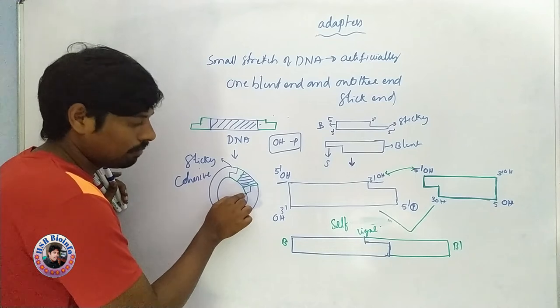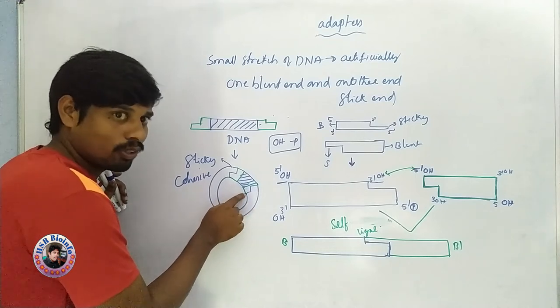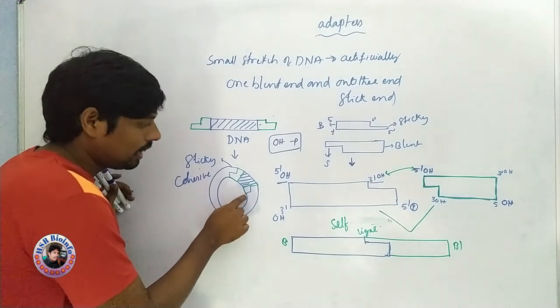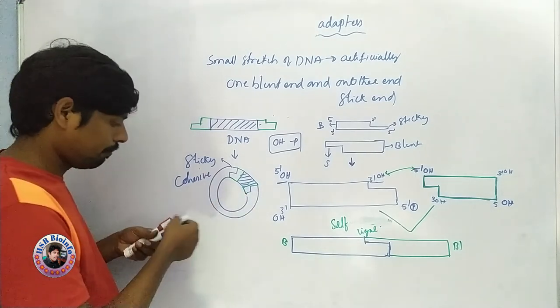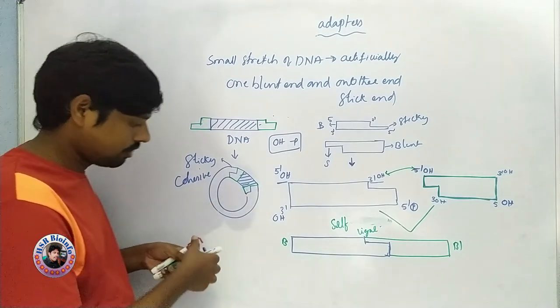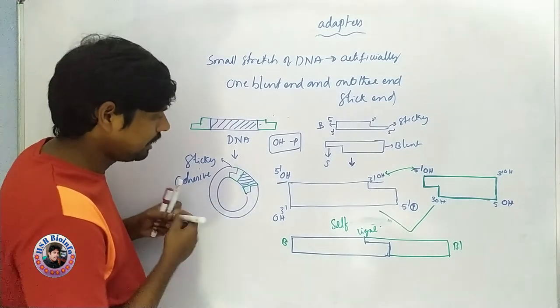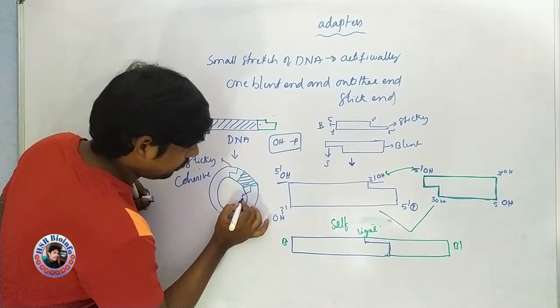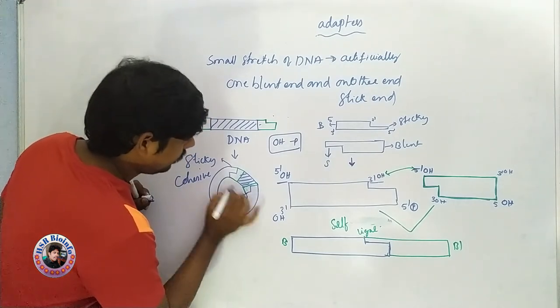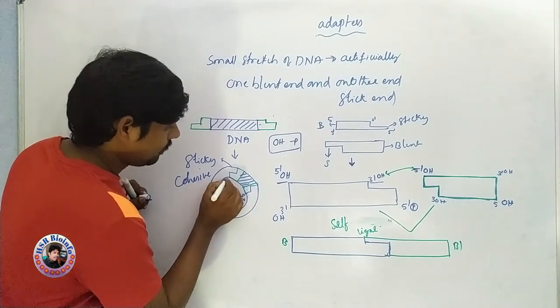At the actual 5' end we have the OH group, and here at the 3' end — this is DNA, this is 3' hydroxyl group here.